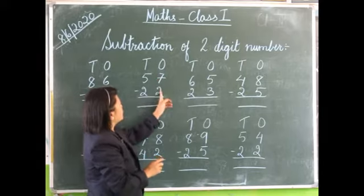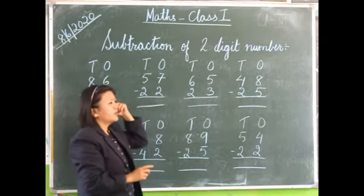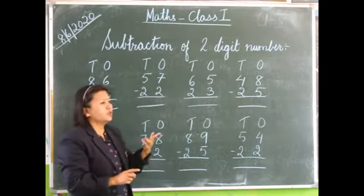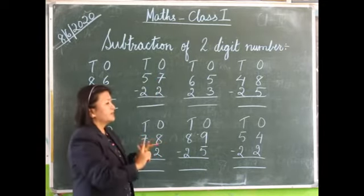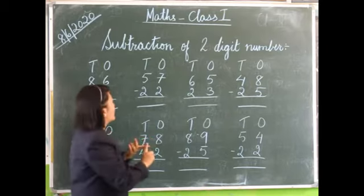Seven minus two. Seven on the head, two in our fingers. We count backwards: seven, six, five.